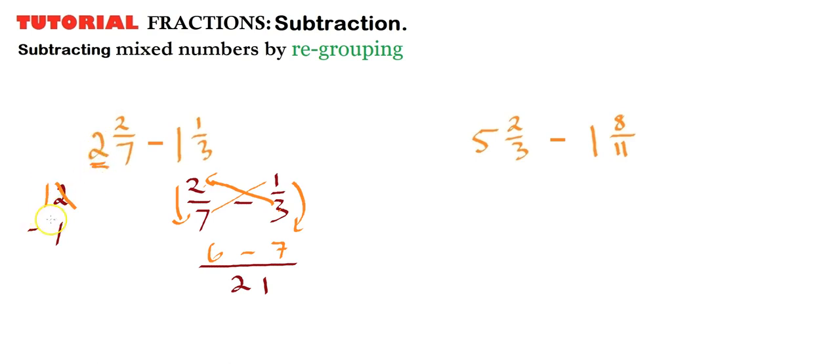That becomes a 1. Now, we're dealing with 21s at the moment, that's the denominator. So 1, that we're borrowing from here, is worth 21 over 21. It's worth 21 21ths. So we're going to add 21 to 6. So now that's 27.